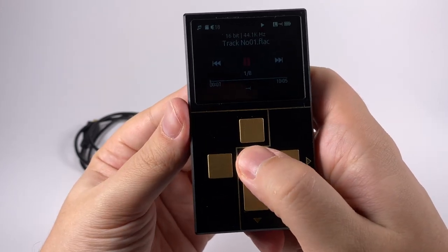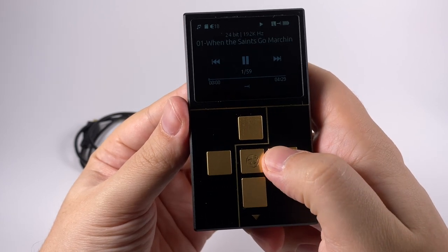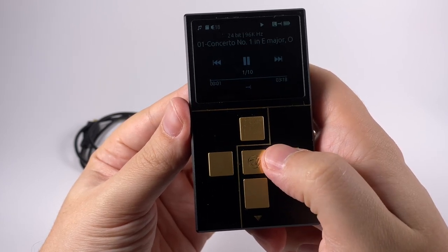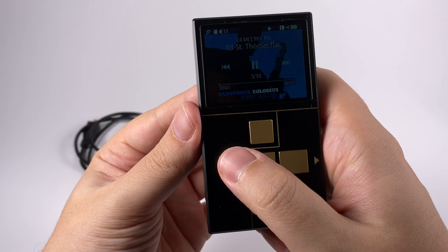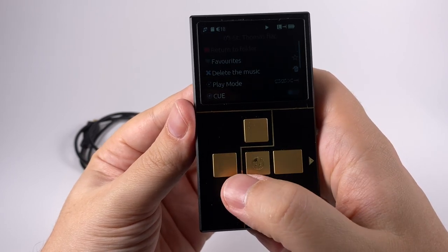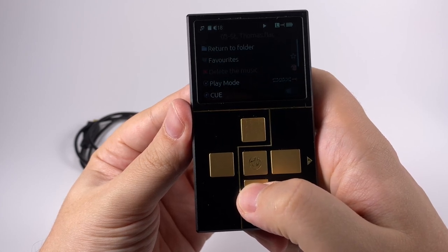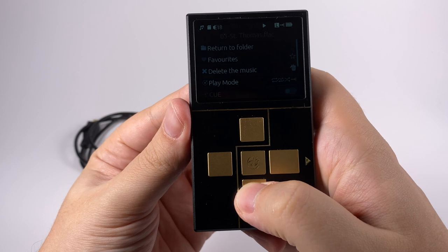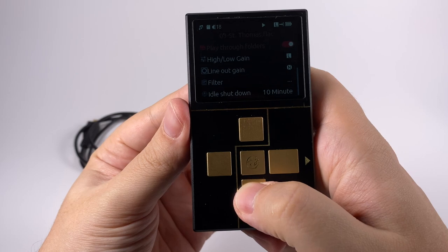On the now playing screen, you can play/pause with the middle button, right button will go to the next folder, and with up/down you're changing the tracks. With left you're going back, and pressing and holding the central button you can return to the folders, add to favorites, delete the music, select play mode, activate. Basically here is almost a full settings menu available here.